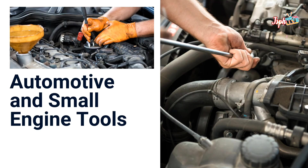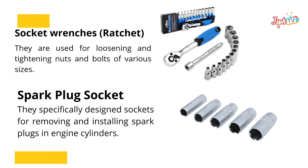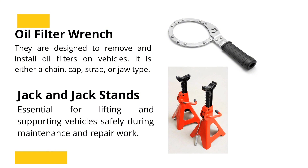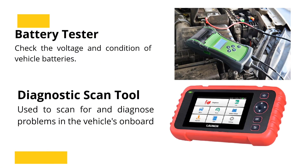Next, the automotive and small engine tools. Socket Wrenches: Used for loosening and tightening nuts and bolts of various sizes. Spark Plug Socket: A specifically designed socket for removing and installing spark plugs in engine cylinders. Combination Wrenches, Adjustable Wrench, and specialty wrenches for different applications. Torque Wrench: Used to apply a specific amount of torque to fasteners to ensure they are tightened to the correct specification. Oil Filter Wrench: Designed to remove and install oil filters on vehicles. Jack and Jack Stands: Essential for lifting and supporting vehicles safely during maintenance and repair work. Battery Tester: Checks the voltage and condition of vehicle batteries.